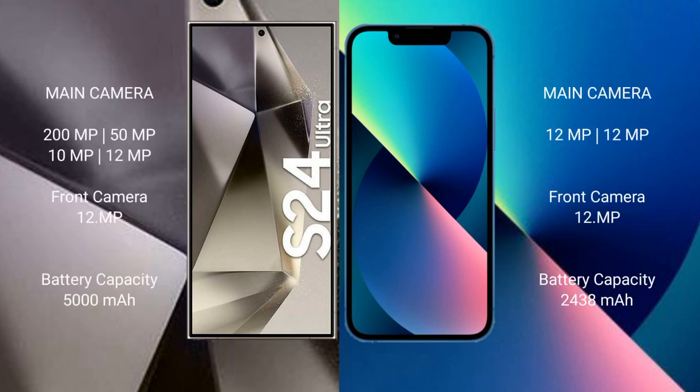Samsung Galaxy S24 Ultra features a rear quad-camera setup: 200MP plus 50MP plus 10MP plus 12MP, and a front camera of 12MP. iPhone 13 mini features a rear dual-camera setup: 12MP plus 12MP, and a front camera of 12MP.